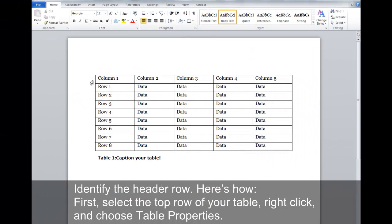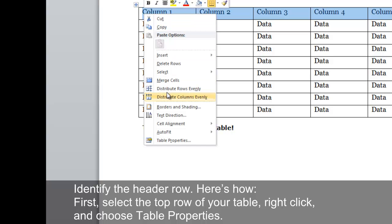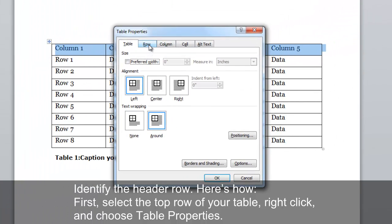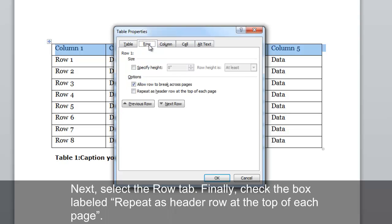Identify the header row. Here's how. First, select the top row of your table, right-click, and choose Table Properties. Next, select the Row tab. Finally, check the box labeled Repeat as Header Row at the top of each page.